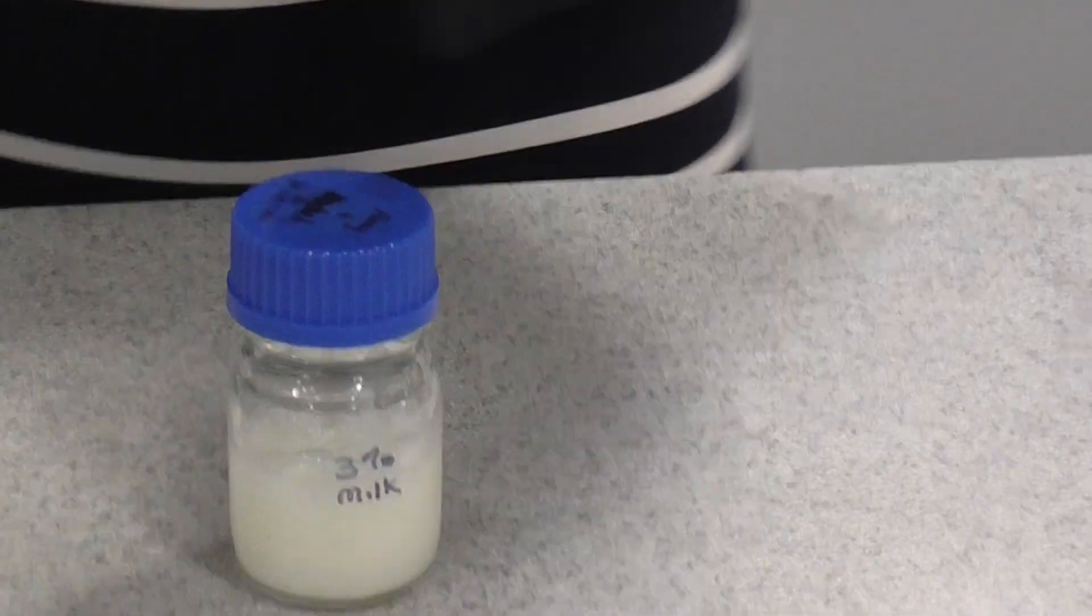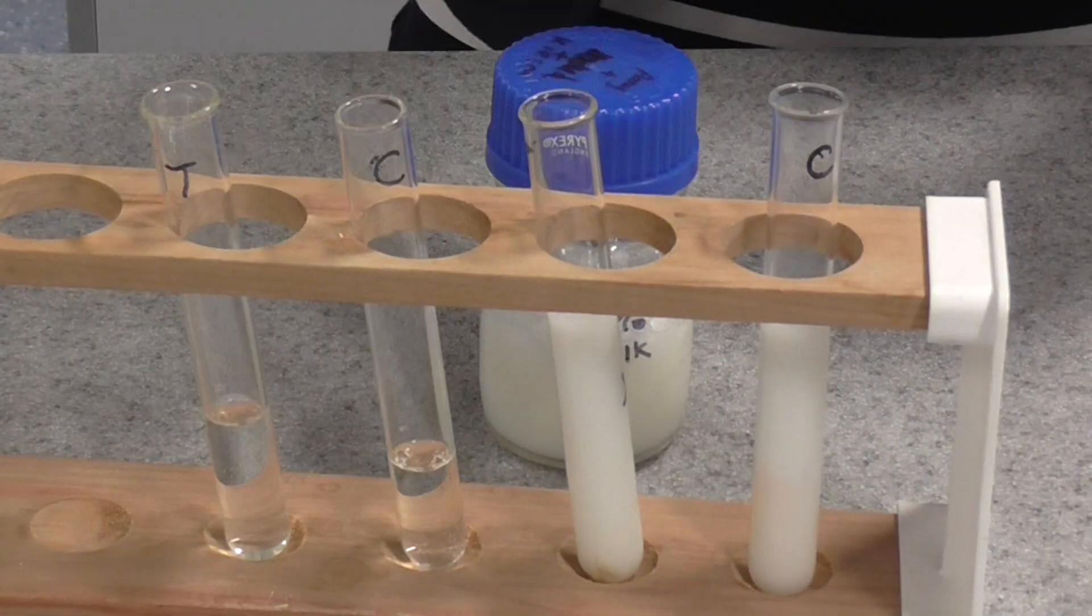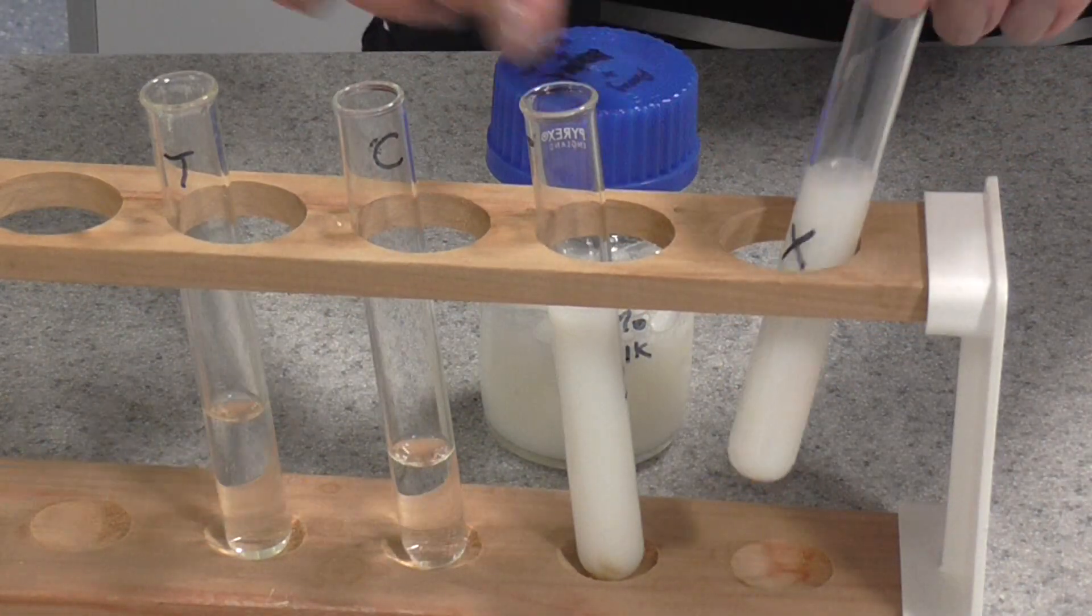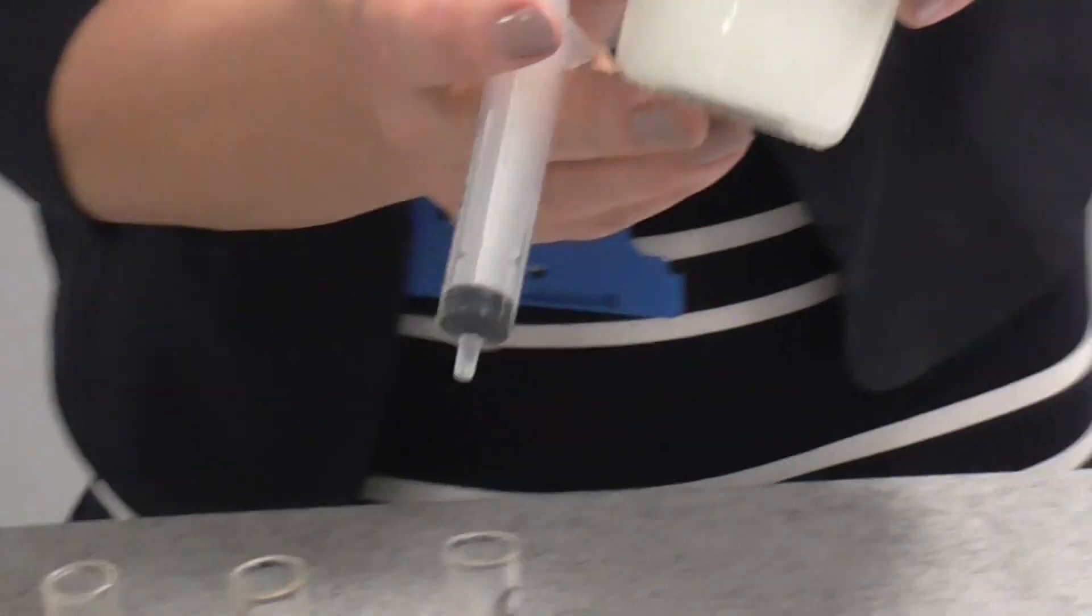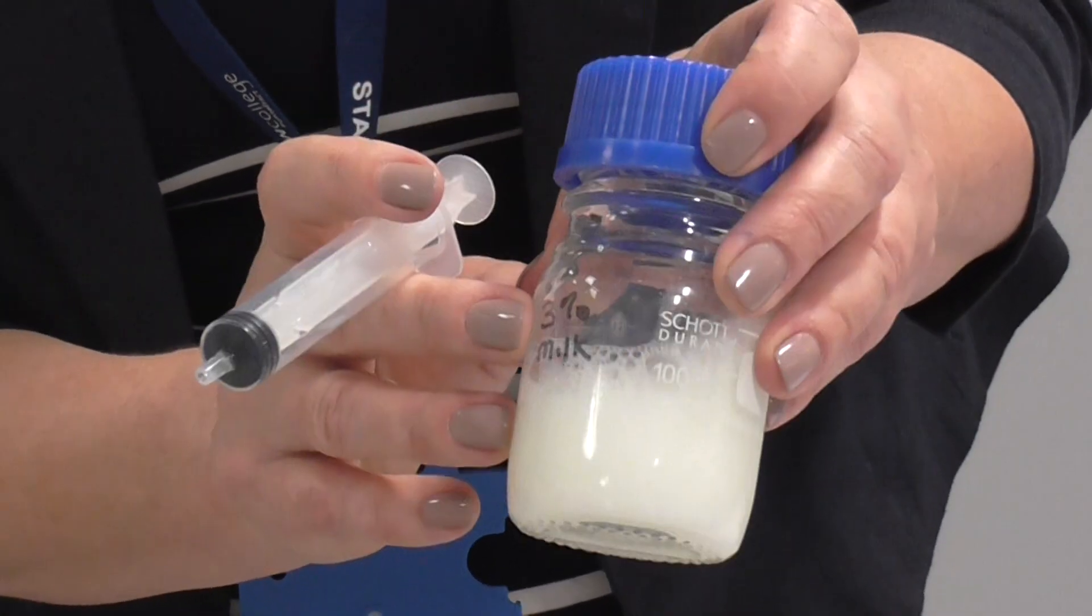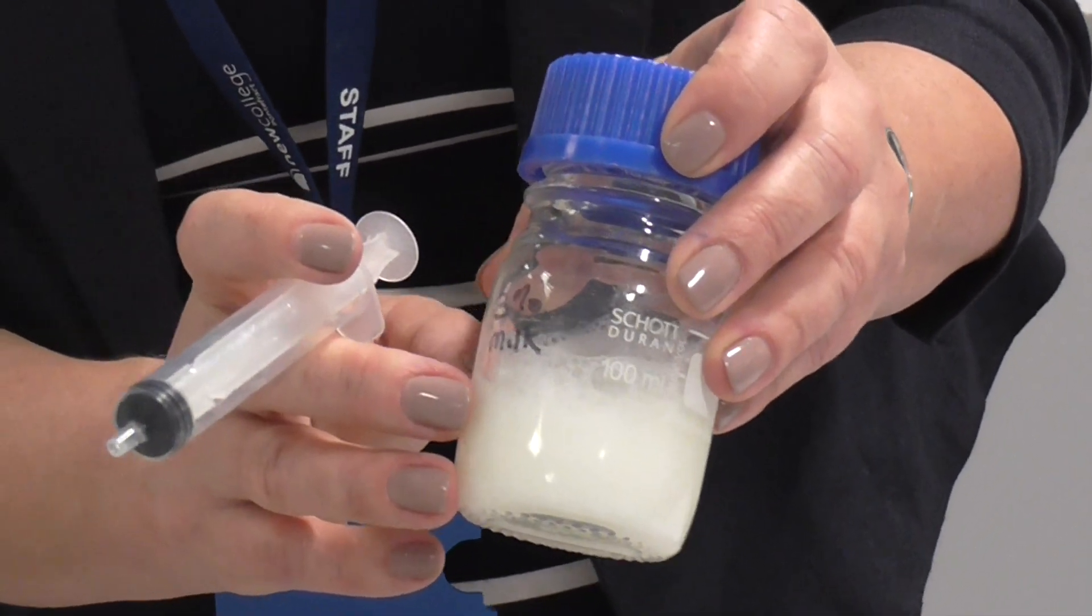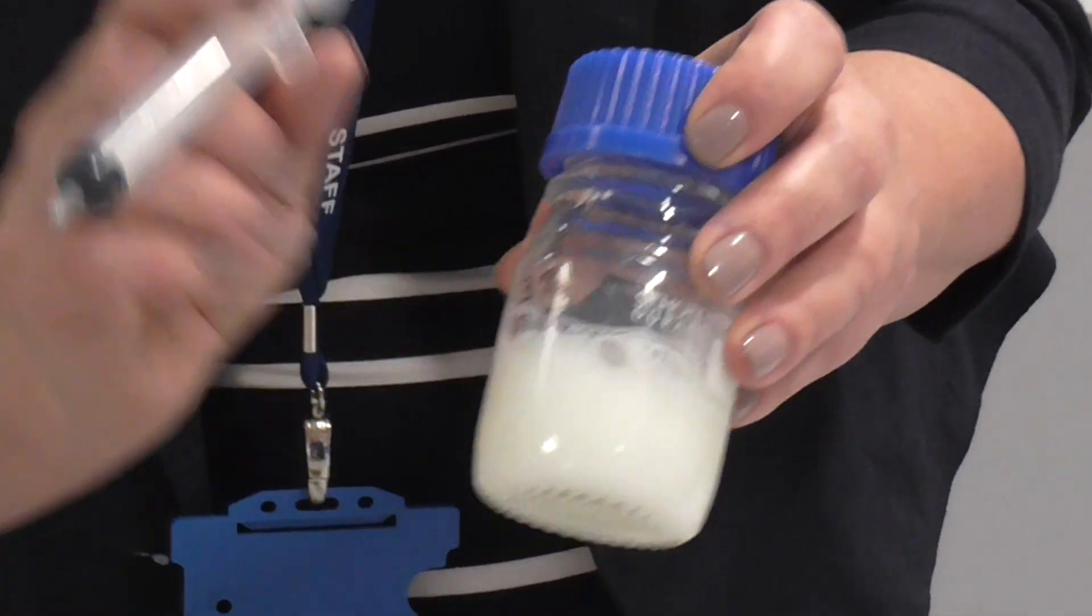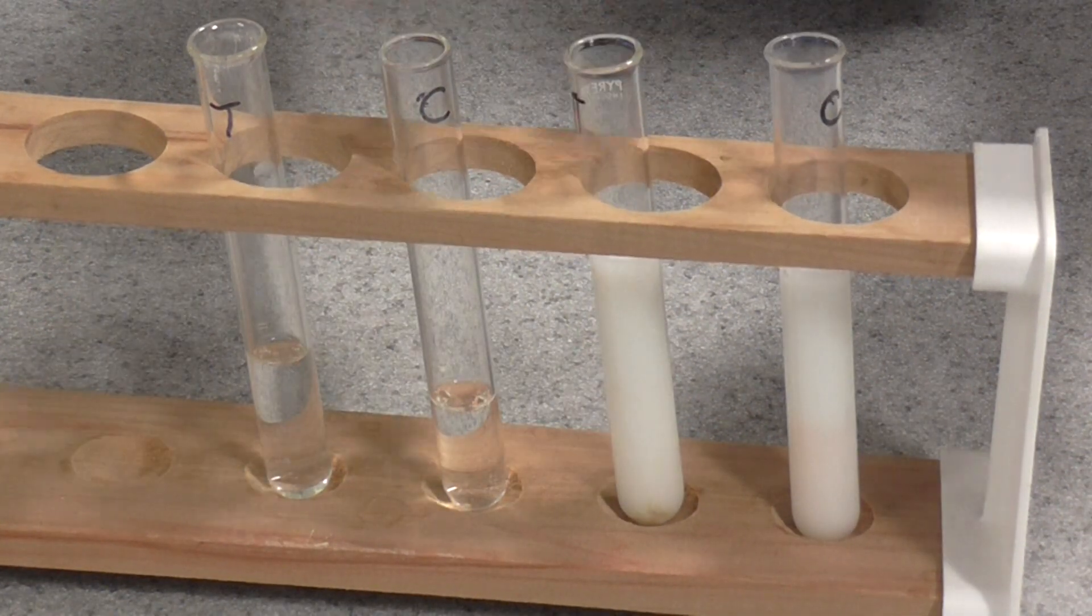Into your two test tubes, T and C, notice you've got the crosses on the back there, you need to use a syringe to put just 10 centimetre cubed of 3% powdered milk. Powdered milk works much better for this experiment. It's just your standard powdered milk from a supermarket, and make up a 3% solution. I've got 10 centimetres cubed of powdered milk solution in tubes labelled C and T.